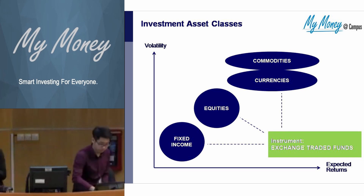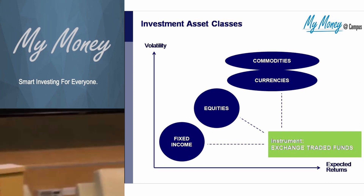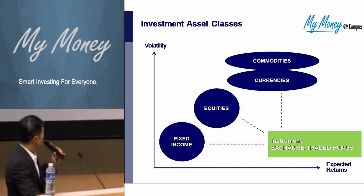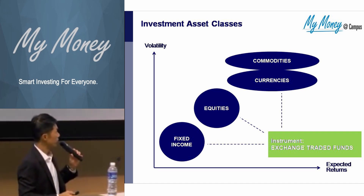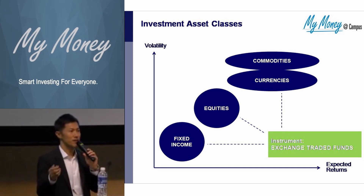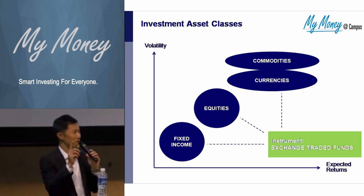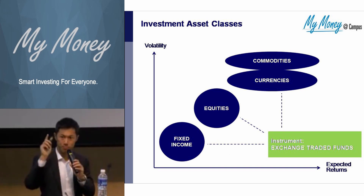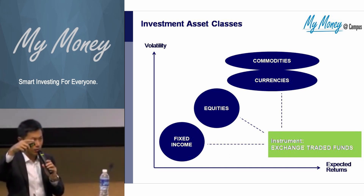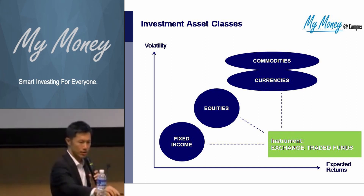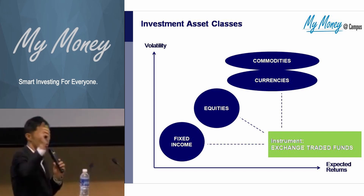I'll move back and continue with the fixed income part of the presentation, which I'll go through a little bit quicker. Equities — we've gone through that. Where to find it? SGX.com, look for the tab My Gateway, and then you have the Investor Roadmap. You can go to all those and find them there. Now I'll move on to fixed income.